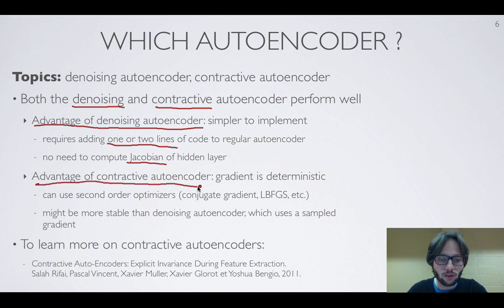The advantage of contractive autoencoder is that we actually have a gradient which is deterministic. There's no sampling involved when we're training a contractive autoencoder. So we can more easily and directly use second-order optimizers like conjugate gradient, LBFGS, and so on.